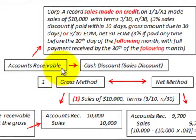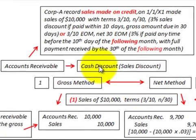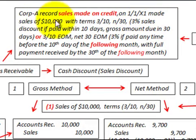Here we're going to be looking at accounts receivable with a cash discount, also referred to as a sales discount. We'll be looking at the gross method versus the net method for recording this cash discount. In our example, Corporation A records sales made on credit on January 1, with sales of ten thousand dollars.